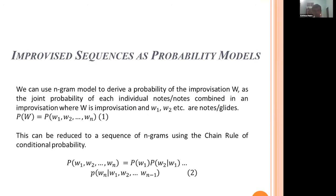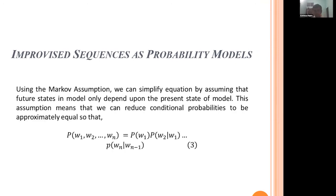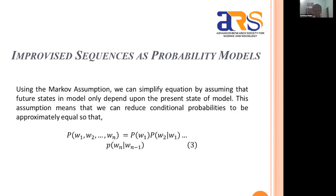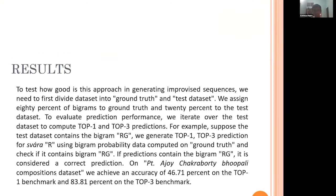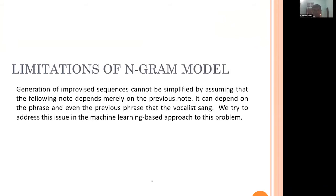We model our improvised sequences as probability models. The result for the bigram model is we get 46% accuracy on the top-one benchmark and 83% accuracy on the top-three benchmark. The limitation of the n-gram model is that it cannot fully utilize the musical context — it can only determine the next note based on the previous note, but that's not how it works in North Indian classical music.